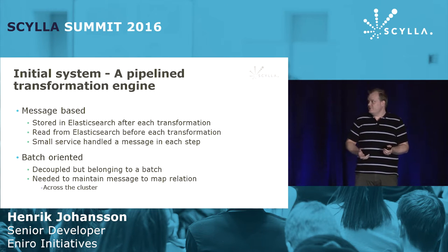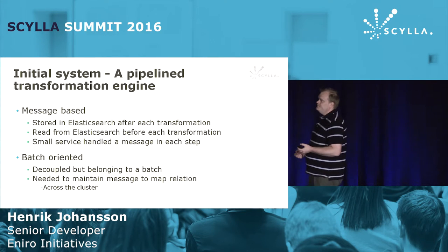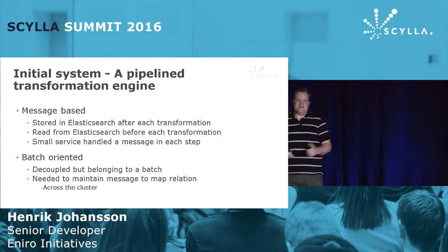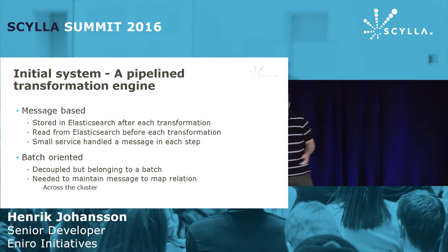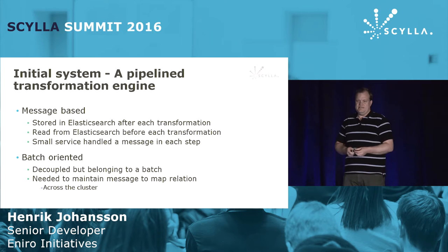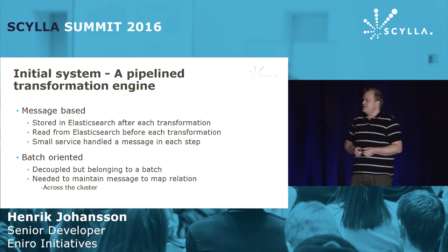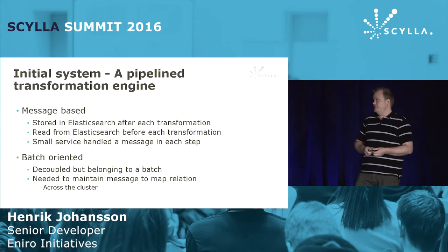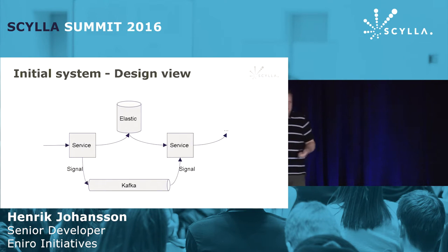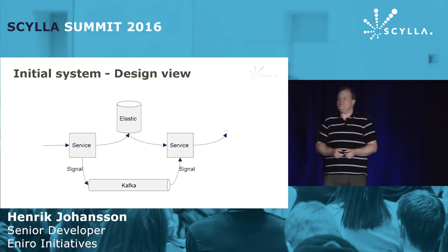An additional complexity was the concept of a batch — essentially, over a time frame, things that happened were deemed to belong together. That batch had to be maintained across the cluster, and each microservice in the stream needed to be able to determine which batch a message belongs to, or collect all messages belonging to a given batch. This is where the problems start to crop up.